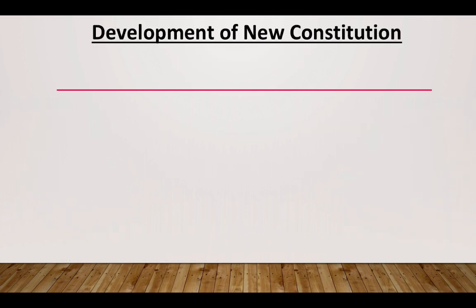So even though we saw some strengths of the Articles, there were definitely a lot of weaknesses. As time went on under this new form of government, many people started to question its legitimacy. One big thing that would shake the confidence of the Articles of Confederation and the new American government was Shays' Rebellion.